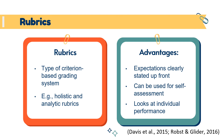Rubrics are a type of standards-based or criterion-based grading system. In our class, we're using holistic rubrics and analytic rubrics. While there are certainly pros and cons, I do really like using them. An advantage is that expectations are very clearly stated up front. Students can also use rubrics to self-assess their own work — hint, hint, nudge, nudge. Rubrics also look at individual performance, not collective ranking: it's about your performance as a student, not how well or poorly other students performed. Although technically you could use a criterion-based grading system and then grade it on a curve.